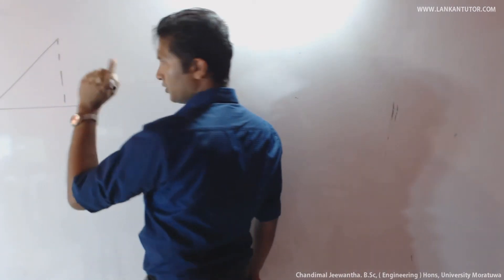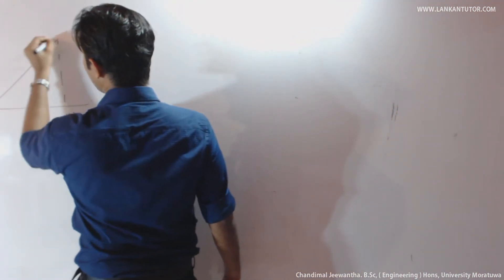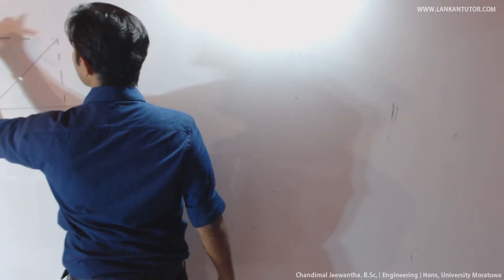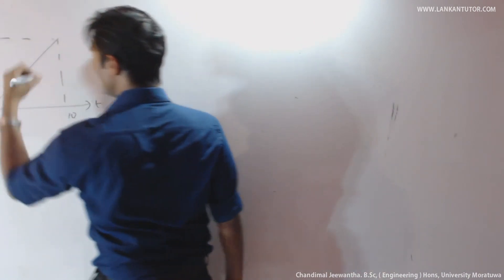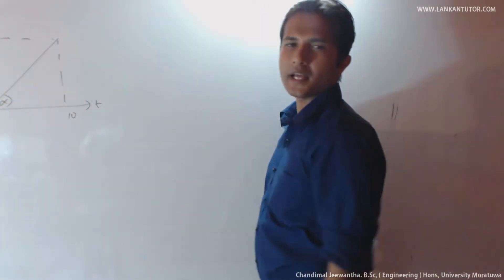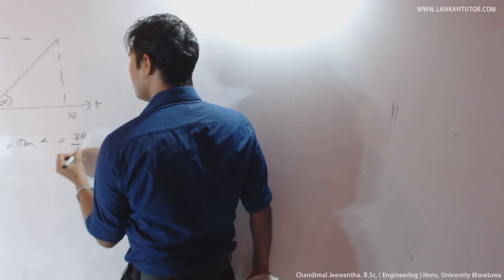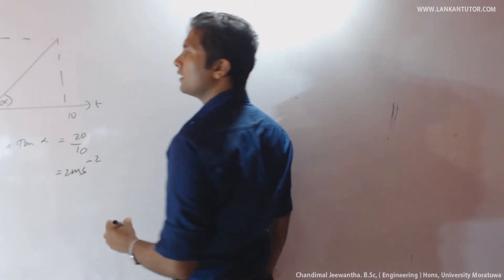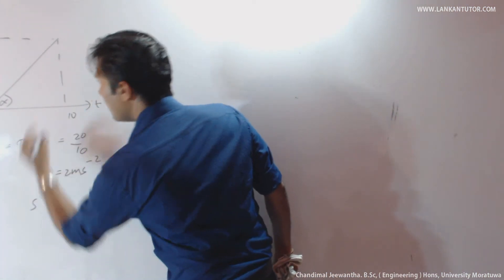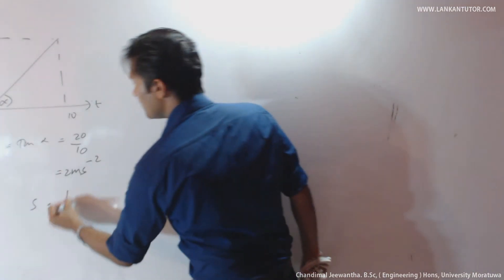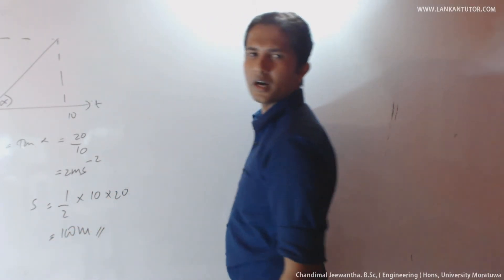Now a small example under the VT graph. An object moves with uniform acceleration for 10 seconds and reaches 20 meters per second. To find acceleration, take the tangent value of alpha: acceleration = tan(α) = 20 divided by 10 = 2 meters per second squared. To find displacement, take the area of the triangle: displacement = half × base × height = 100 meters.